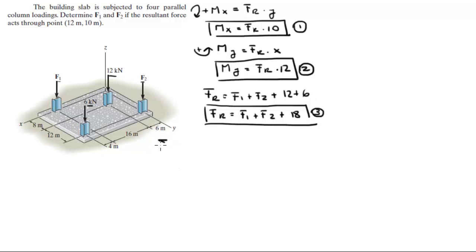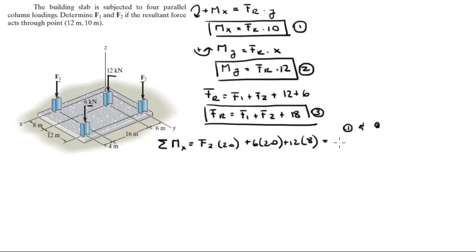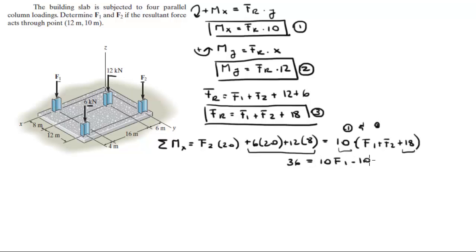The sum of the moments in x is equal to F2 times 20, plus 6 times 20, plus 12 times 8. These are the moments on x, and this is equal to, according to equations 1 and 3, 10 times FR, where FR is F1 plus F2 plus 18. When you clean this up — multiplying the 18 by 10 and combining F1 and F2 terms — you get 36 equals 10F1 minus 10F2. Call this equation 4.